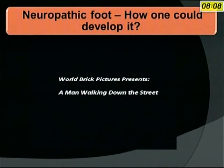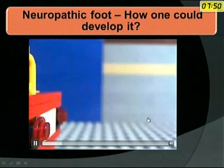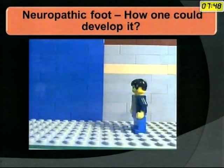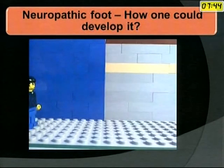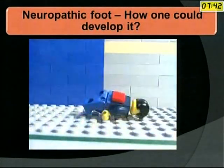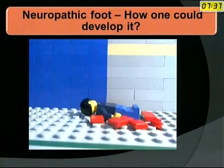How does one develop a neuropathic joint? A short video will enable you to understand how a neuropathic joint develops. Walking on irregular surfaces like this, uninhibited, could lead to the development and fall of an individual with neuropathic joints.